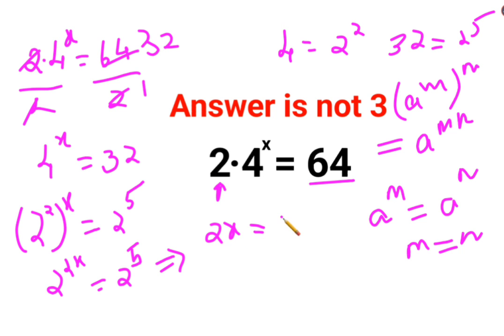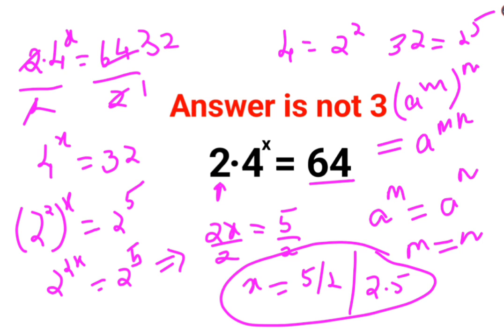Next, in order to find the value of x you will divide both sides by 2. So I can say value of x is 5 by 2, or I can even say it is 2.5. These are the answers for this particular question.